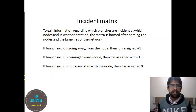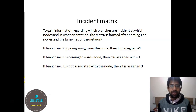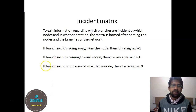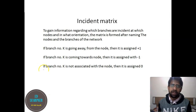Let us jump into incident matrix. Incident matrix is built when you need to gain information regarding which branches are incident at which nodes and in what orientation. When you have a network, you name every node and every branch. The convention is: if branch k is going away from a node, it is assigned +1; if branch k is coming towards the node, it is assigned -1; and if branch k is not associated with a particular node, it is assigned 0. These are the simple rules to build the matrix.